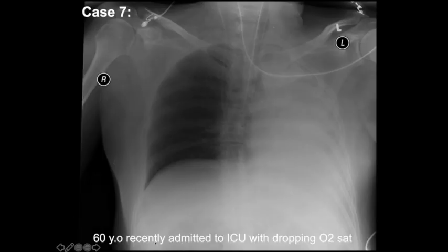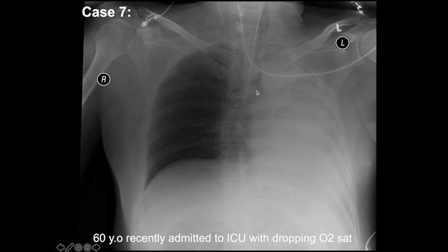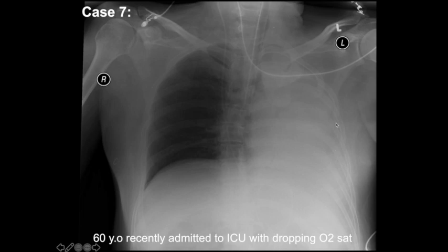Case 7: a 60-year-old patient admitted to the ICU with dropping oxygen saturation. Step one is to look at lines and tubes. Here's an endotracheal tube going down the trachea. The carina is right here, and this endotracheal tube goes beyond the carina and into the right main stem bronchus. The entire left lung is opacified — there's whiteout of the entire left lung — and the heart and mediastinum are shifted towards the left. The right lung is aerated and the left lung is not, resulting in left lung collapse. When you have collapse, you have pulling of the mediastinum towards the volume loss.